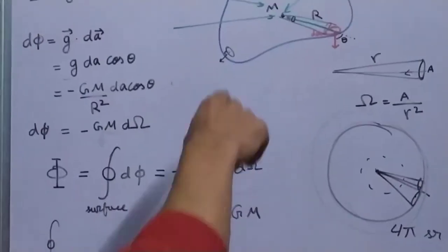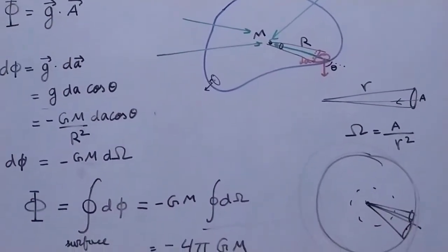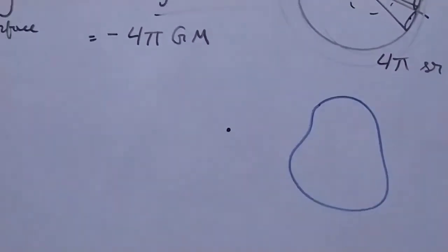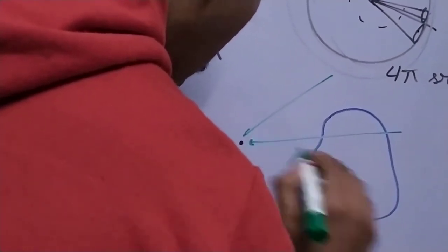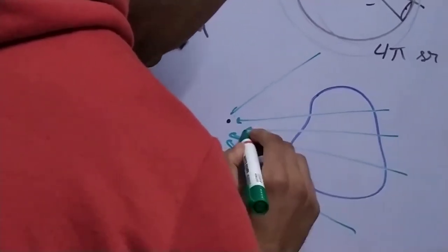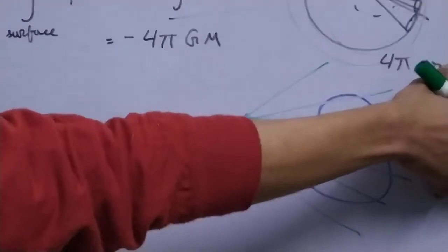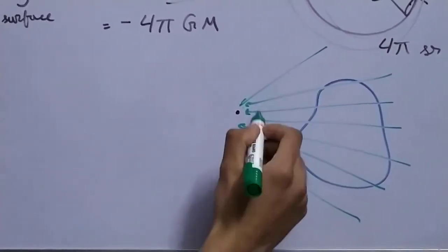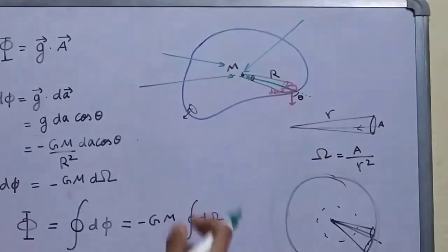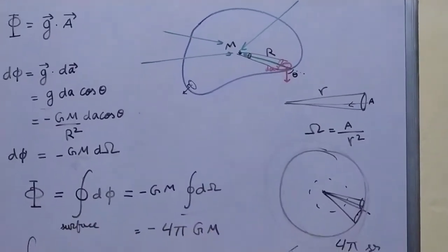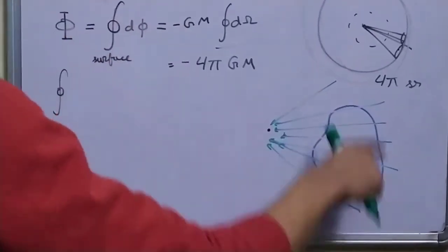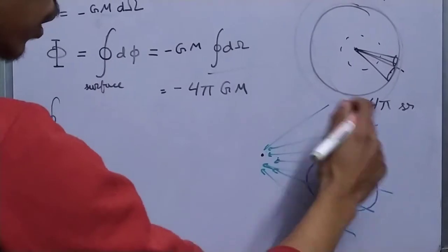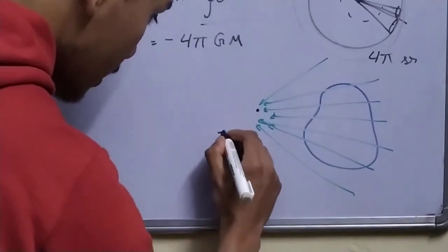What if the mass is outside the surface? In that case, all the field coming into the surface also leaves it — the field entering equals the field exiting. So there is no net flux through the surface due to an external mass. Therefore Φ equals zero for an external mass.